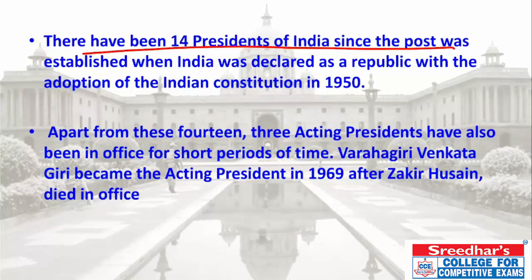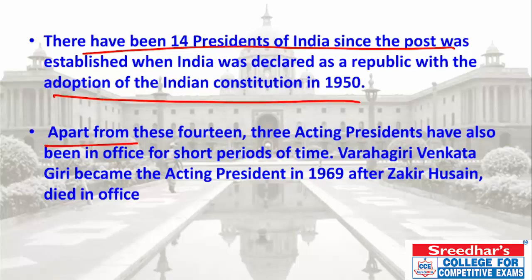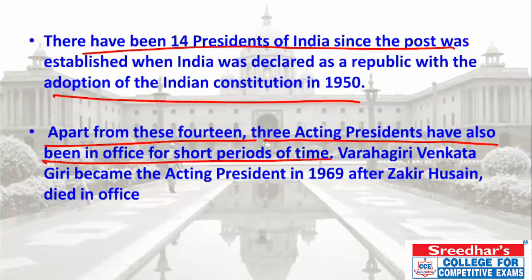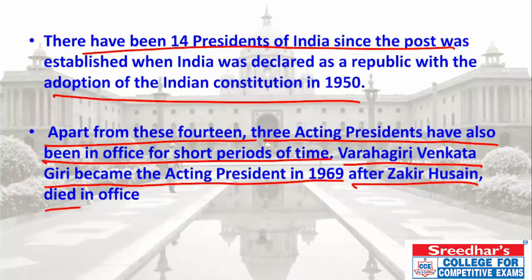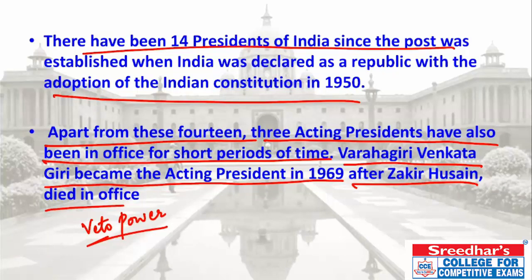Post-independence, India has had 14 Presidents, of whom three were acting Presidents. Varahagiri Venkata Giri (V.V. Giri) became acting President in 1969 after Zakir Hussain died in office. The President also has veto power. There are four types of veto power: Pocket Veto, Suspensive Veto, Qualified Veto, and Absolute Veto.